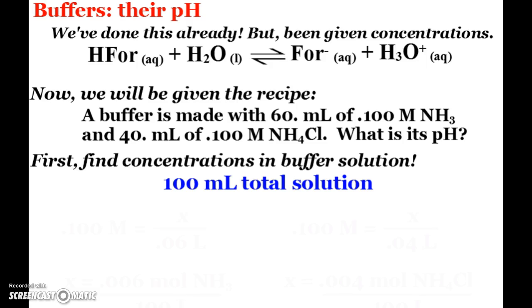Now, buffers finding their pH. We've already done this. We did an example problem of this earlier, formic acid and the formate ion, and we were able to find X and calculate the pH because of the hydronium. With buffers, though, you typically aren't just handed the molarities. You're given a recipe. So like this, a buffer is made with 60 milliliters of 0.1 molar ammonia and 40 milliliters of 0.1 molar ammonium chloride. What is its pH? Well, we need to find the concentrations. We're going to mix the 60 and 40 milliliters, so we're going to make 100 milliliters total. So what we have to adjust is the concentration of each of these parts of the buffer system.